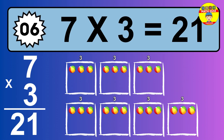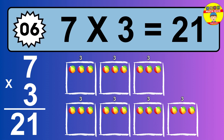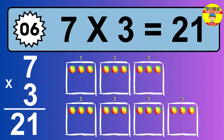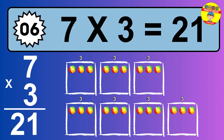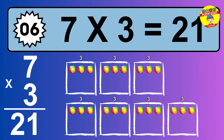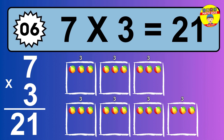Question 6. 7 times 3 equals what? The answer is 7 times 3 is 21. To calculate, we have 7 groups with 3 balls each one. So how many balls do we have? 21 balls.